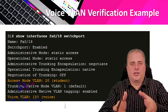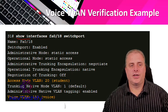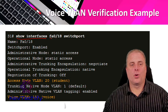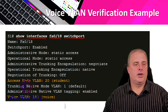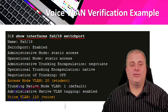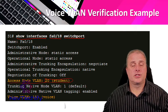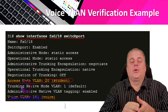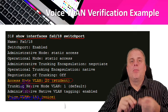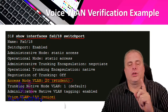After configuring voice on a switch port, you can verify your VLAN information using the command 'show interfaces FastEthernet 0/18 switchport'. Looking through the output, you can see the port is enabled, and further down you'll see the access mode VLAN is VLAN 20 — the student VLAN — and the voice VLAN is 150. Typically each access port can only belong to one VLAN at a time, but it can belong to both a data VLAN and a voice VLAN simultaneously.